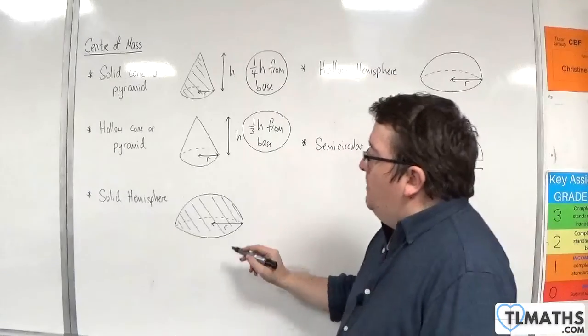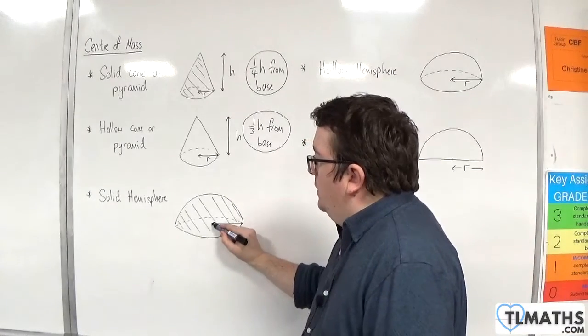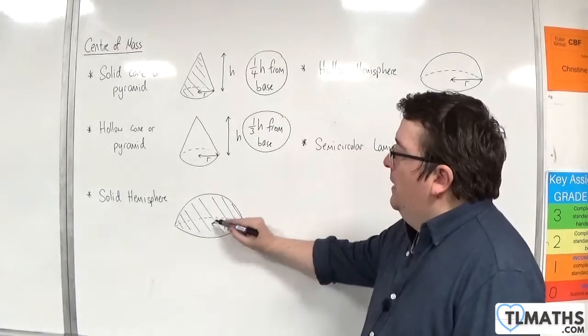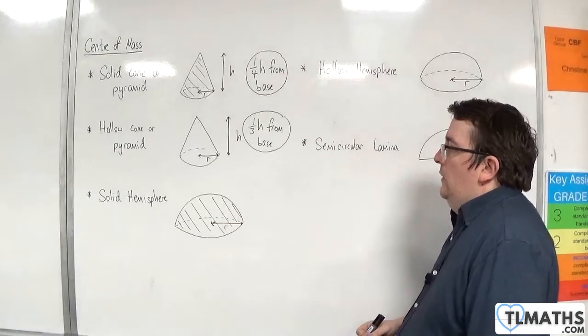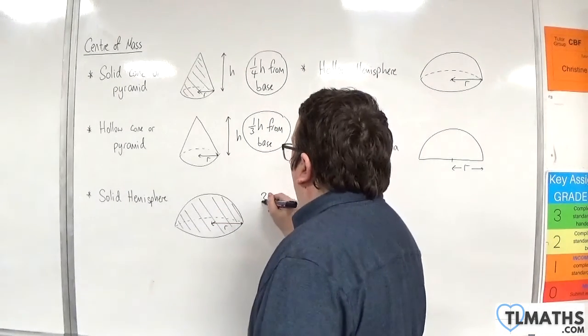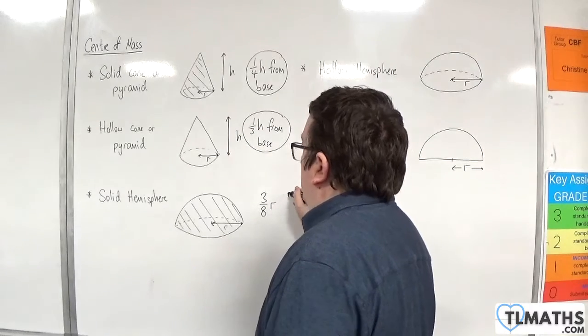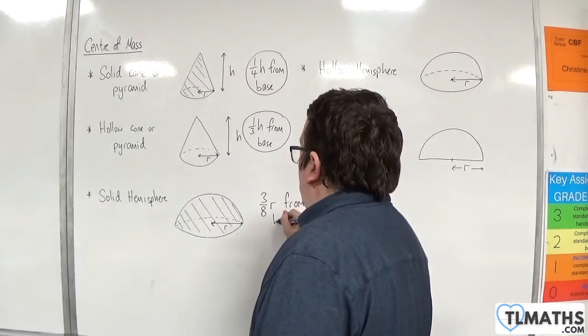For a solid hemisphere, so at the center of your circular base, and then upwards if you've got it flat on the table, then it is three eighths times R from the base.